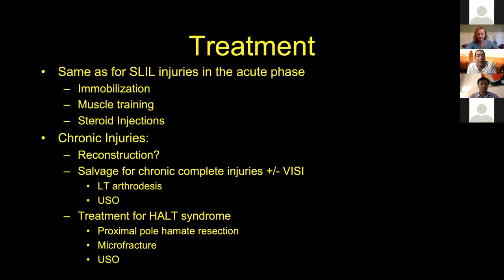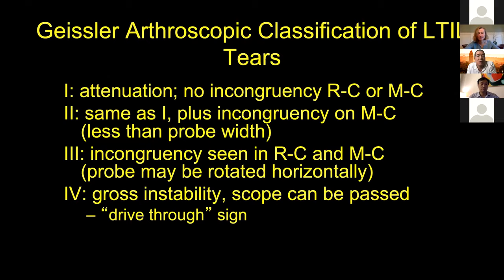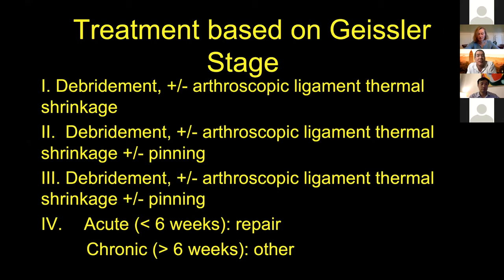My treatment based on the Geissler classification — viewed arthroscopically — for the earlier stages, debridement with thermal shrinkage can be effective. As you get into the later stages, add pinning of the LT interval. If completely disrupted, repair if acute, or reconstruction, fusion, or ulnar-shortening osteotomy if chronic.